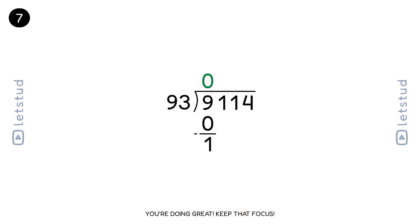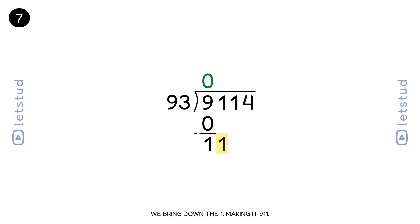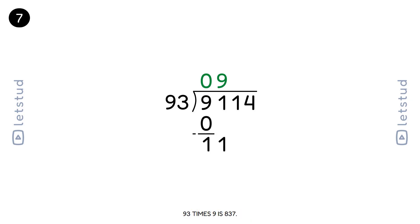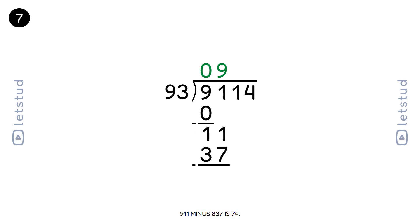You're doing great, keep that focus. Let's bring down the next digit, 1, making it 911. 93 fits into 911 nine times. 93 times 9 is 837. 911 minus 837 is 74.